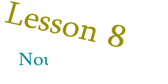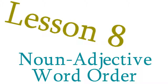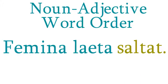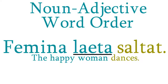Lesson 8: Noun Adjective Word Order. Take a look at this sentence, which means, 'The happy woman dances.' You already know that leita is an adjective which modifies, or describes, the noun femina. Notice, however, that the word order here is different from English. Literally: the woman happy dances.